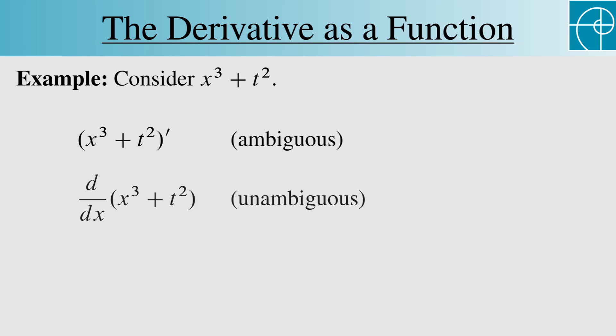But this expression is unambiguous because the dx tells us to differentiate with respect to x. And this expression is also unambiguous as long as f equals x cubed plus t squared, since the x in f of x tells us that f is a function of x, not of t.